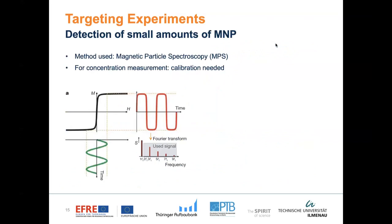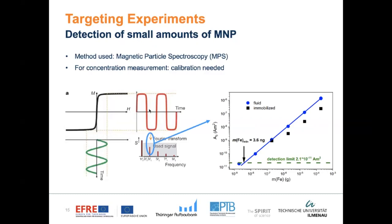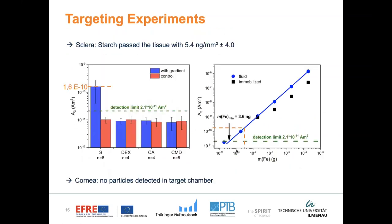Of course, it is complicated to measure such small amounts of particles. For this we used magnetic particle spectroscopy. Briefly: we have the magnetization curve of the particles and apply a sinusoidal signal. Due to the non-linearity, we obtain a non-sinusoidal shaped magnetization. After a Fourier transformation, we can use the third harmonic to calculate the amount of particles in our fluids.